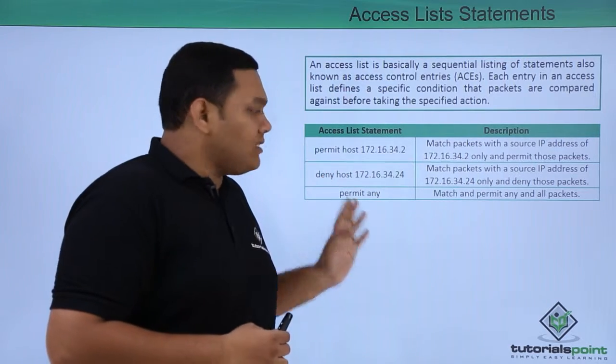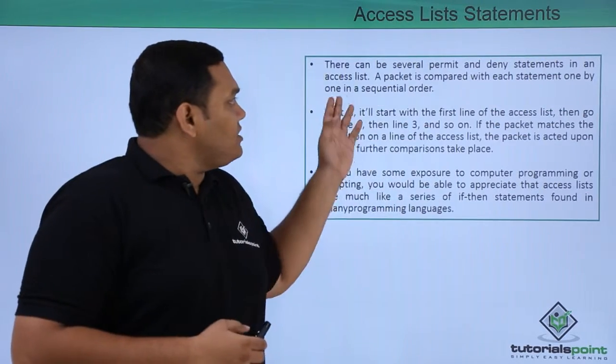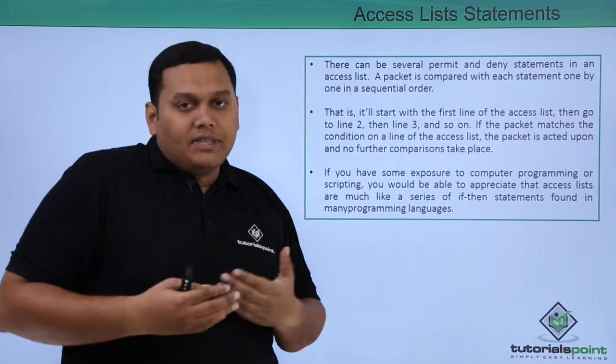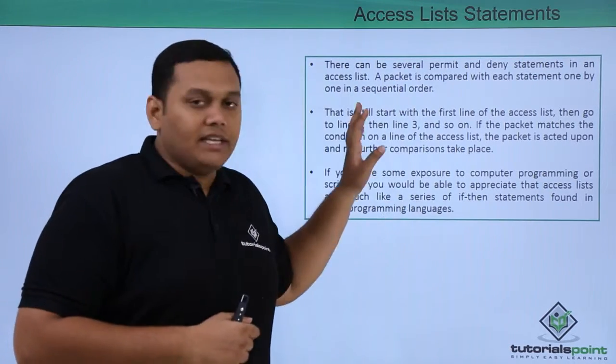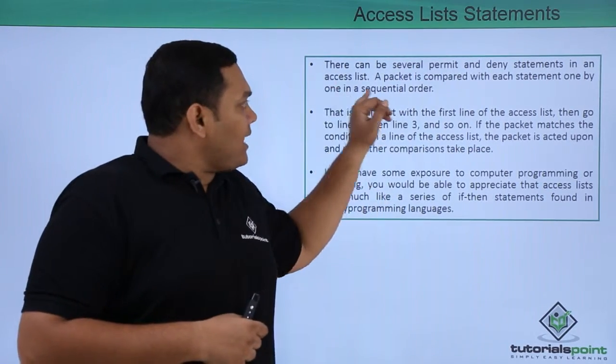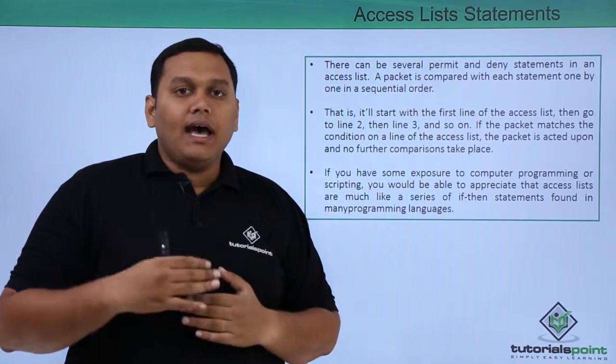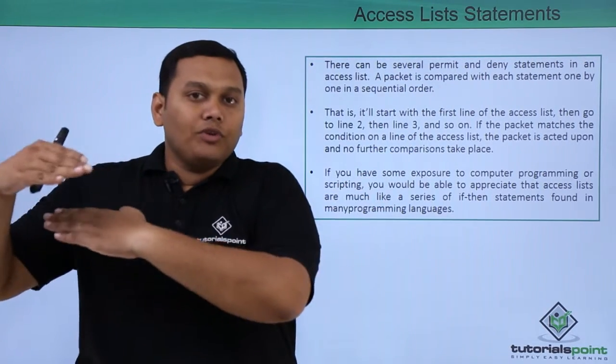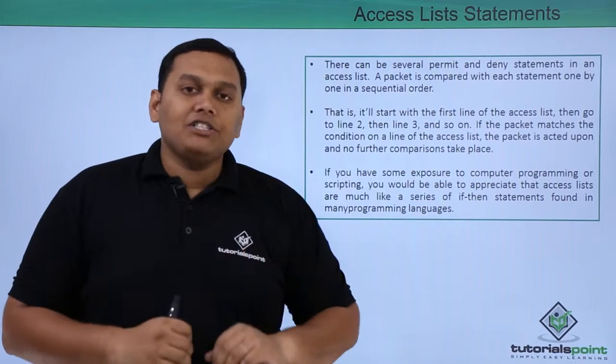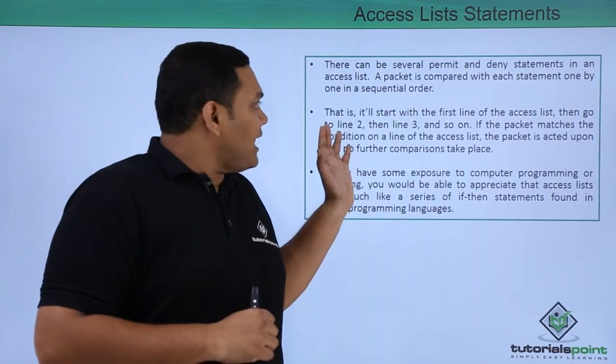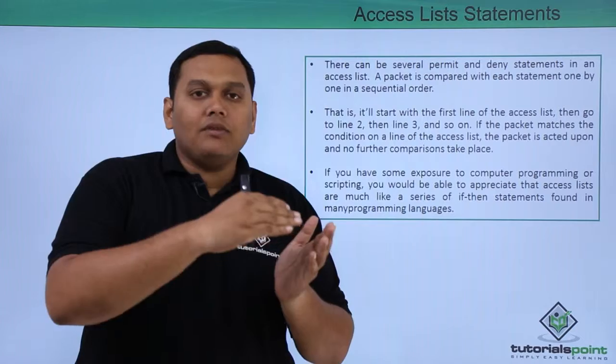When you have several permit and deny statements in the list, a packet is compared with each statement sequentially. The packet starts with the first line of the access list, then compares with the second, third, and fourth lines.